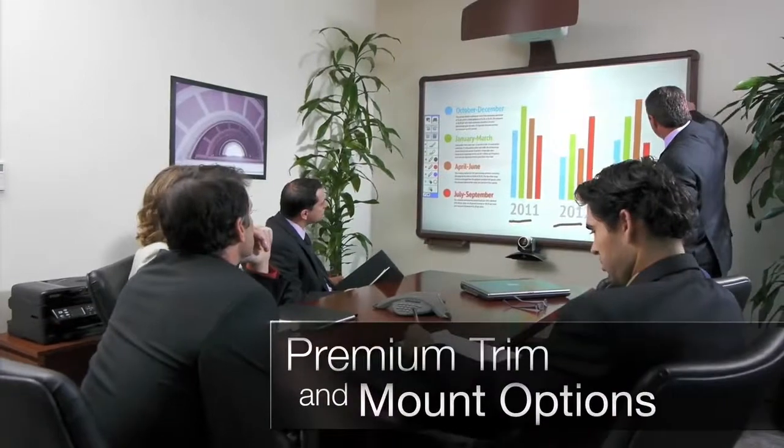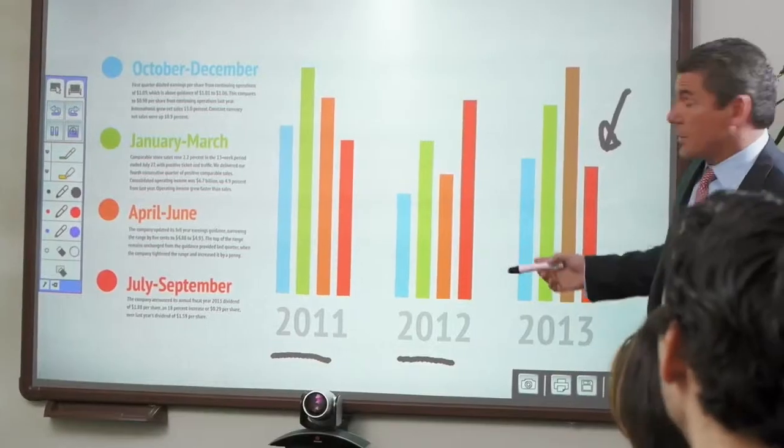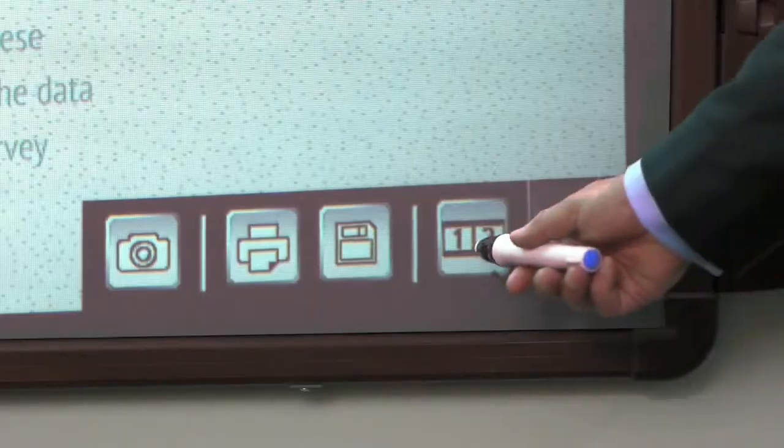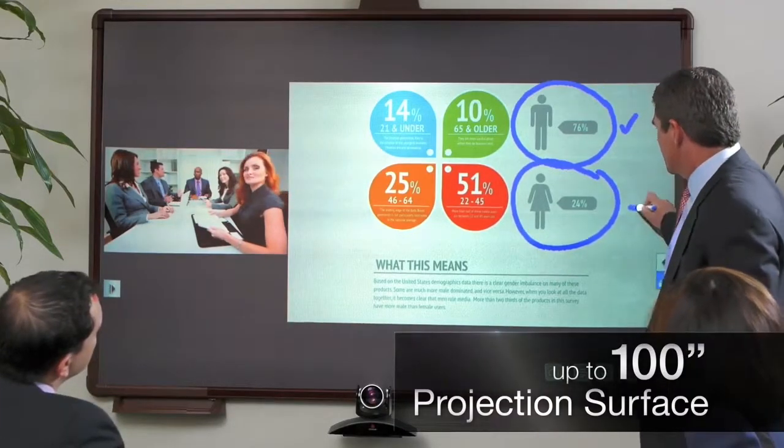Add a premium trim and mount package to your BrightLink Pro for executive offices and boardrooms. Connect your video conferencing equipment for a much bigger and more nimble working surface than a flat panel display.